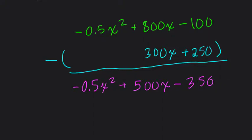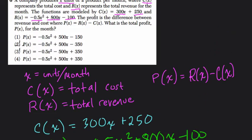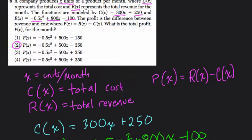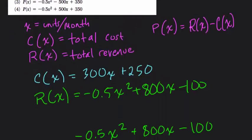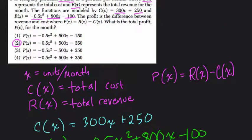So this is our answer. Let's see if we can find it in the choices. And here it is, choice 2. Negative 0.5x squared plus 500x minus 350. That's exactly what we got. So that worked out. I hope this helped.